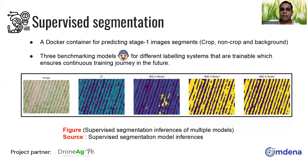For supervised segmentation, we delivered a Docker container for predicting stage one images. We have different stages of crops, and we predicted the first growth stage. We delivered three benchmarking models for different labeling systems — supporting three labels, five labels, and nine labels by segregating and aggregating the labels. These benchmarking models are trainable, which ensures a continuous training journey in the future.